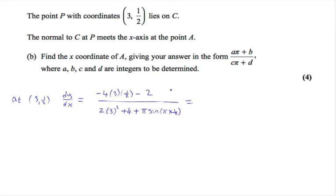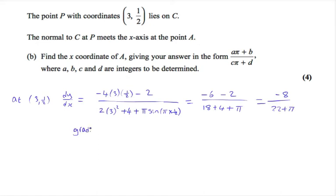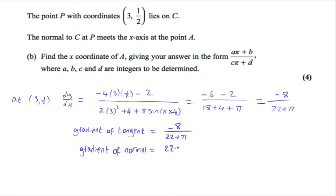Minus 4 times 3 times 1/2 is −6. 3 squared is 9, times 2 is 18, plus 4. π times 1/2 is π/2, and sin(π/2) is 1, so π times 1 gives us π. Simplifying gives −8 over 22 + π. So the gradient of the tangent equals −8/(22 + π). Since the tangent and normal are perpendicular, the gradient of the normal is the negative reciprocal of this, which is (22 + π)/8.